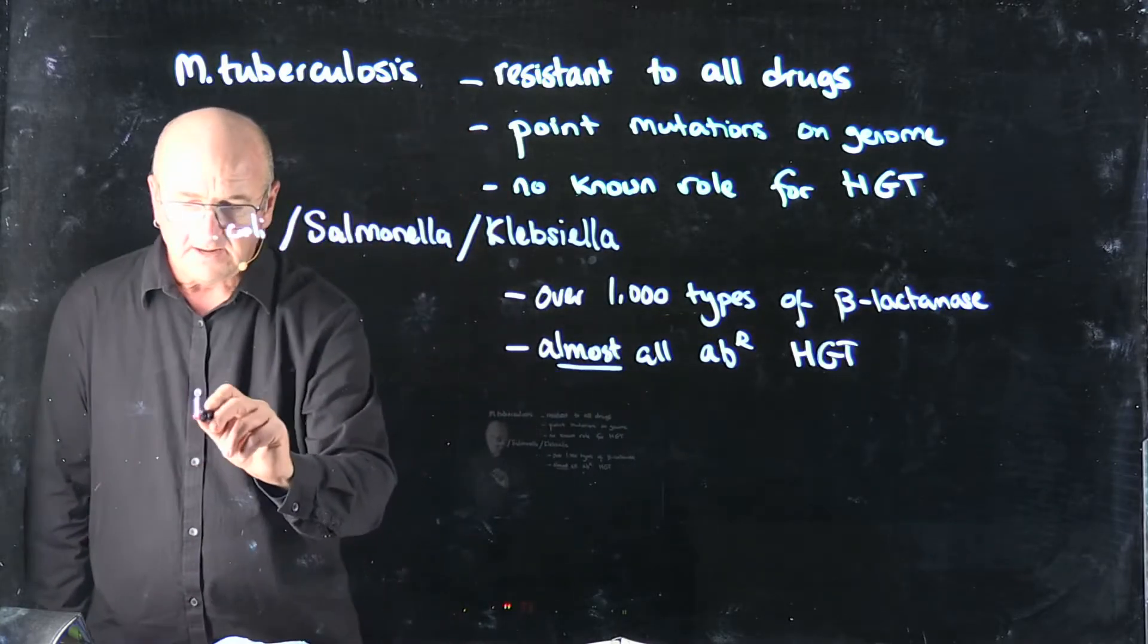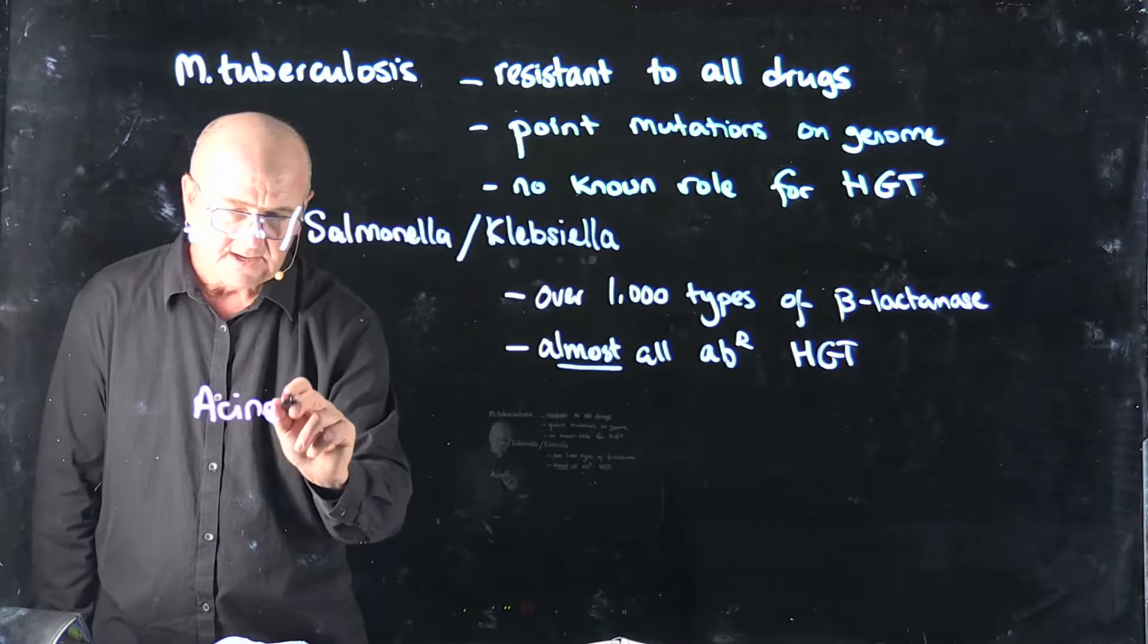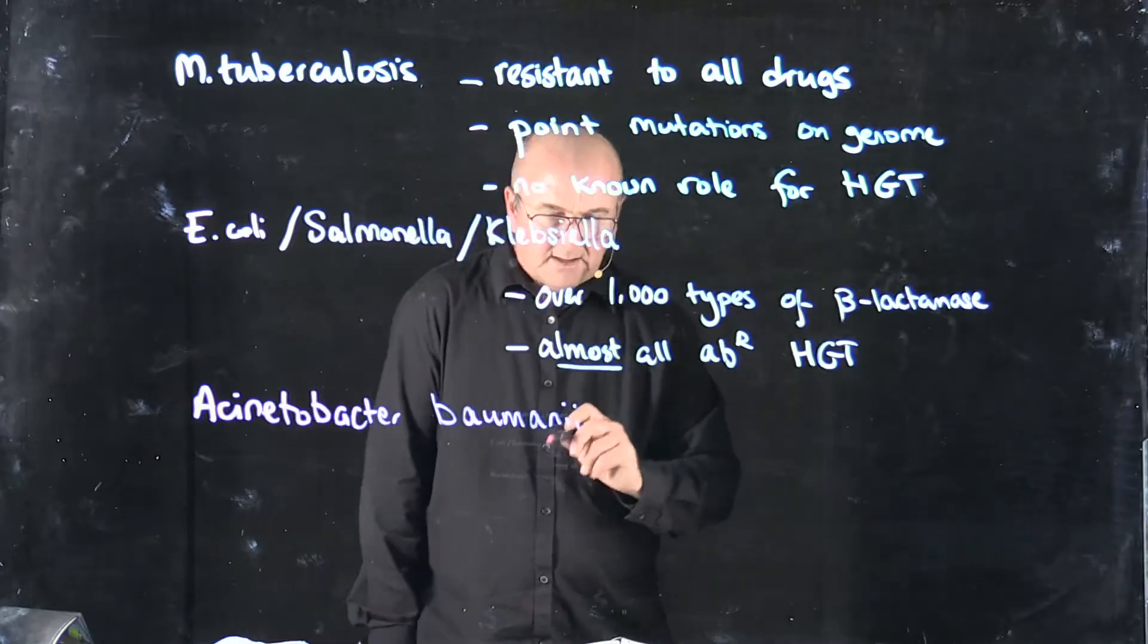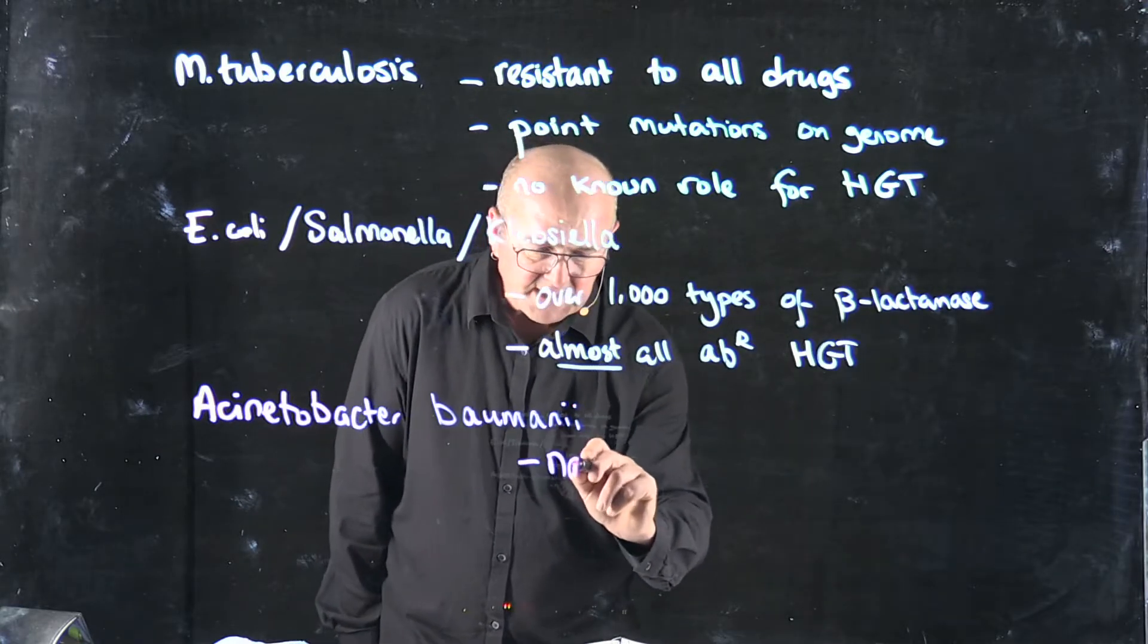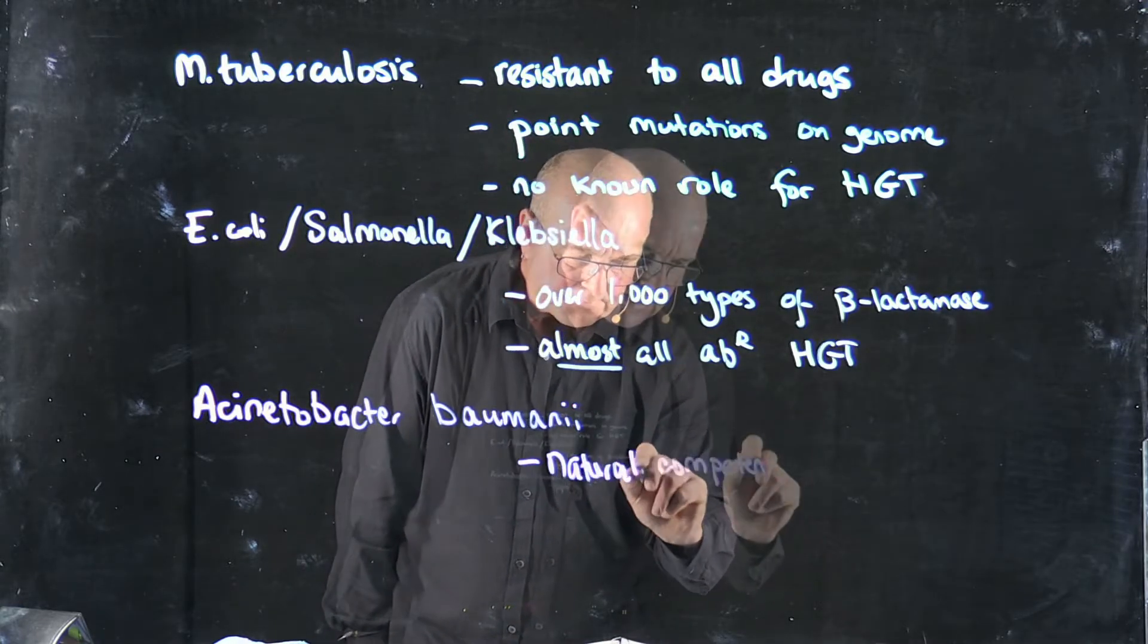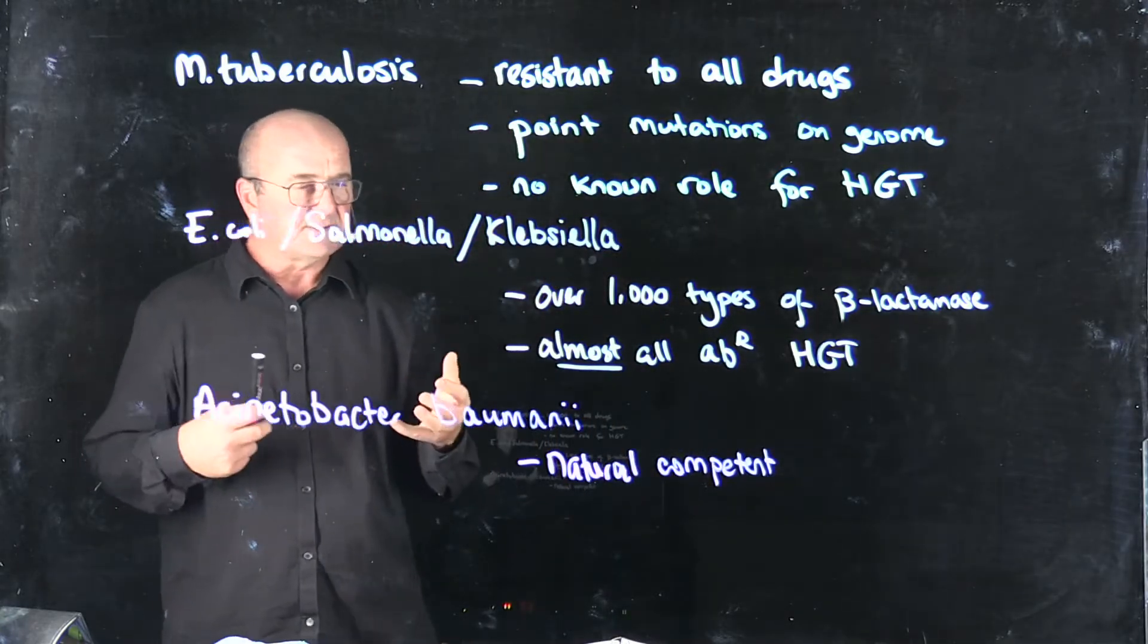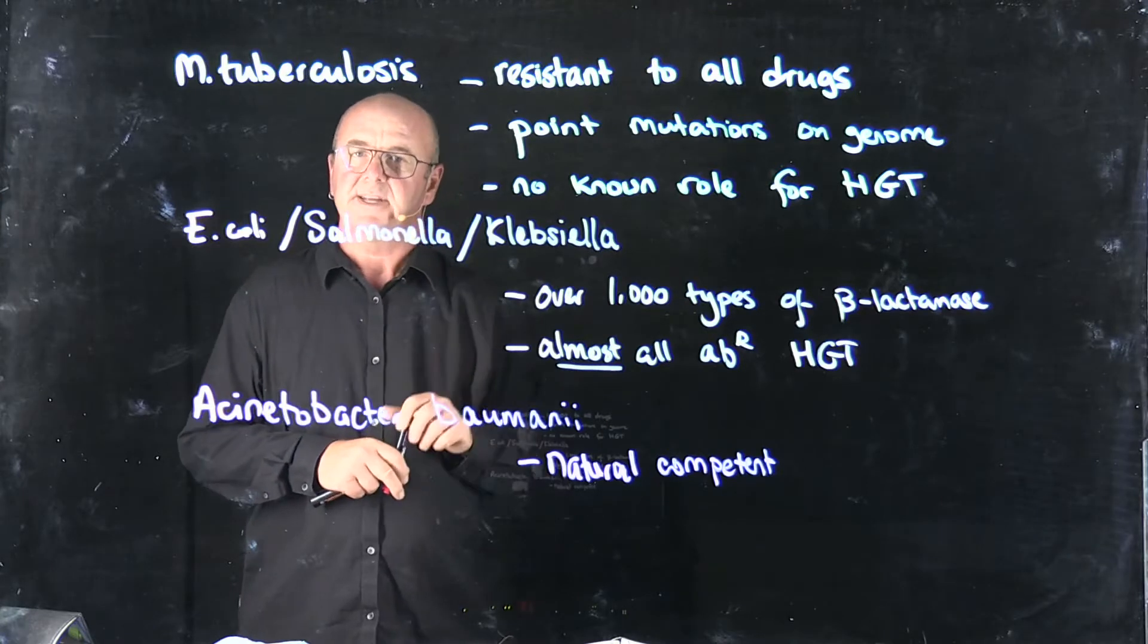And then another pathogen, Acinetobacter, this little bugger, is naturally competent. What that means is, when Acinetobacter's hanging out in the soil, where it likes to live normally, it can just take up DNA.